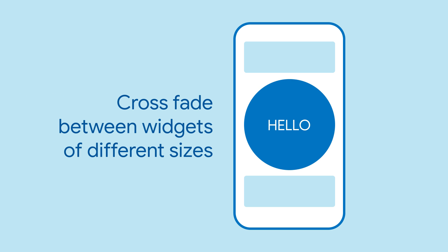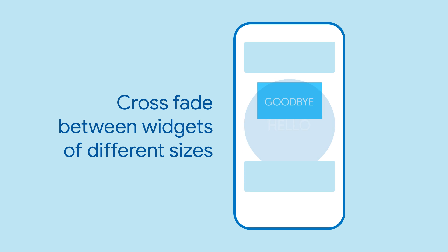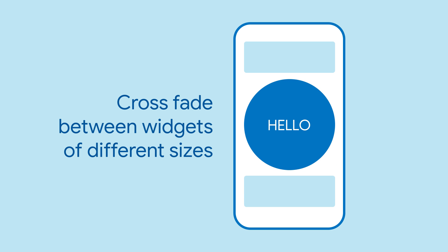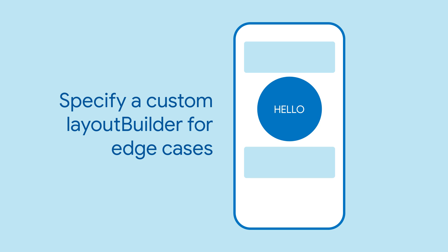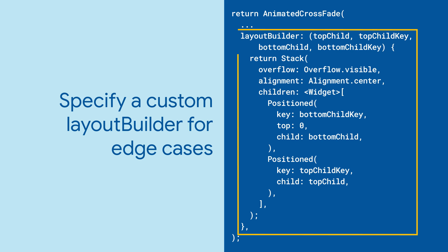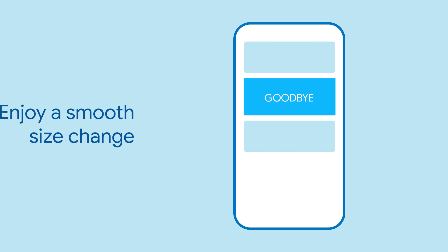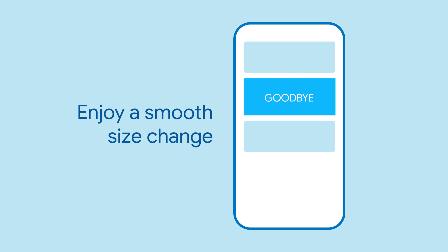Animated Crossfade works great if the two widgets have the same size, but it will also crossfade between sizes if needed. If you are crossfading between two widgets of unconstrained size, Animated Crossfade will do the right thing by default. If the widgets have specific sizes, you might need to provide a custom layout builder to avoid jumps in the layout like these. Here is how you might avoid this particular jump — now there is no jump and the two widgets are nicely crossfading in size.